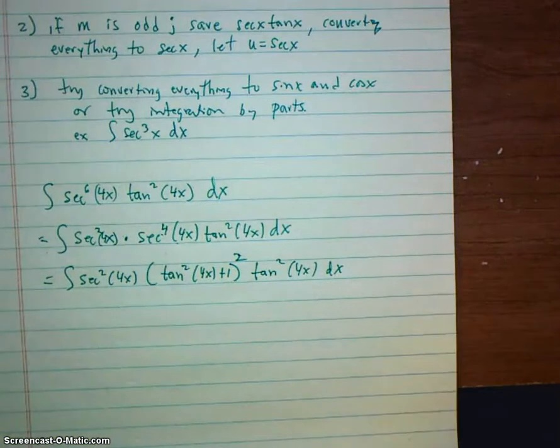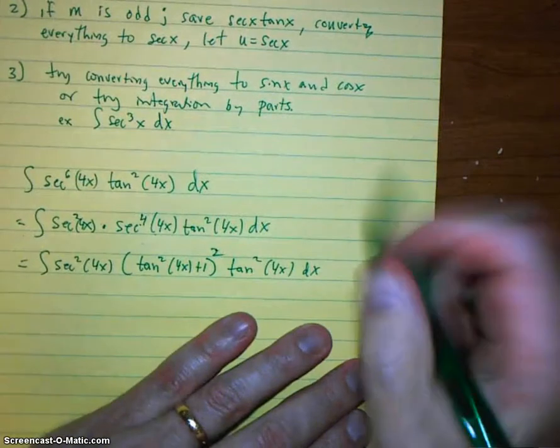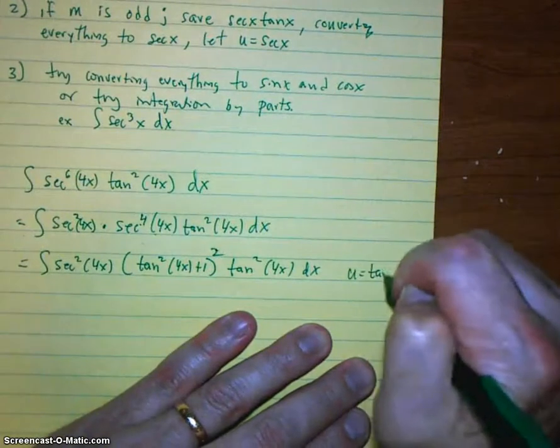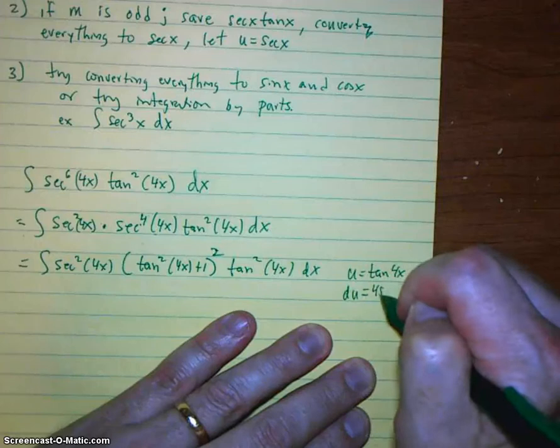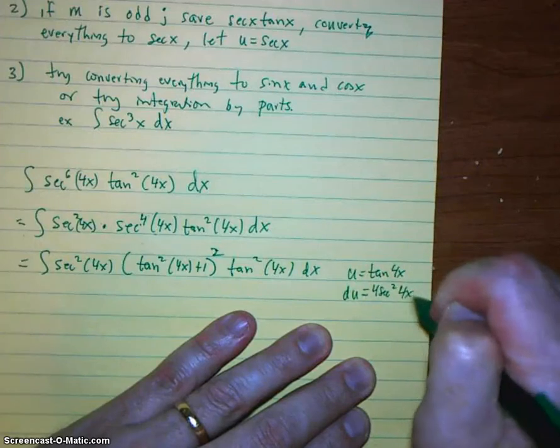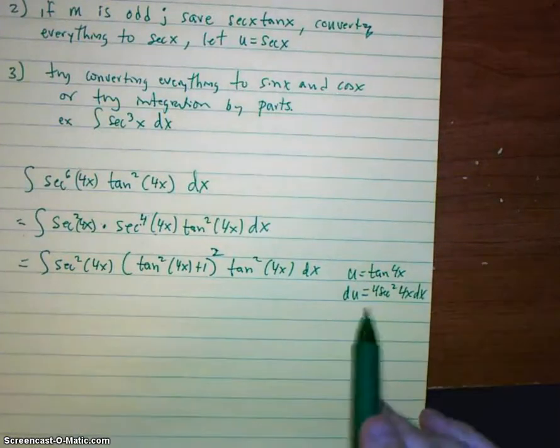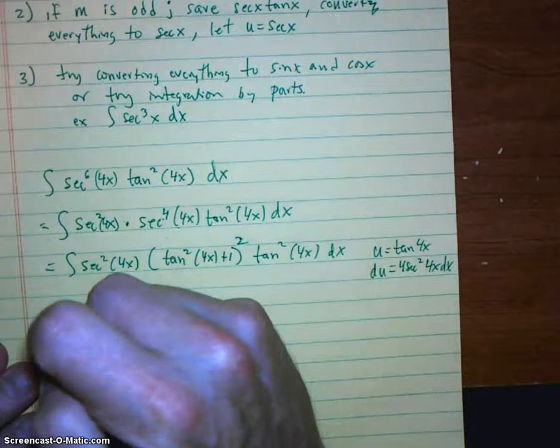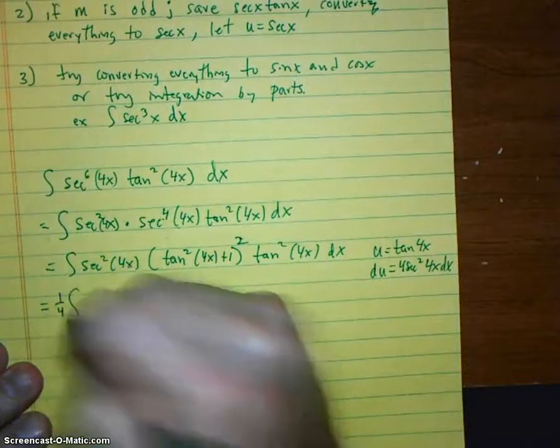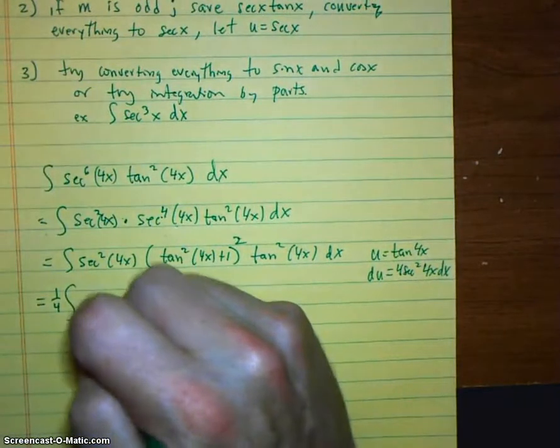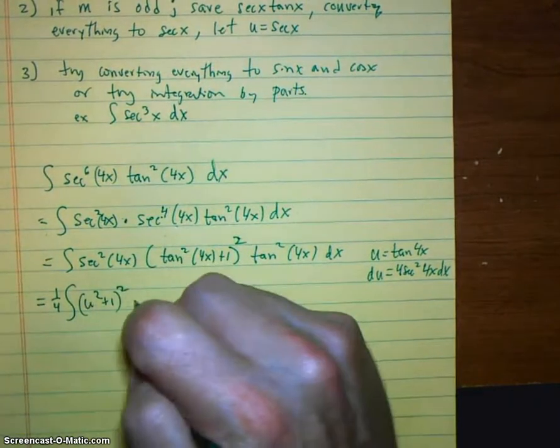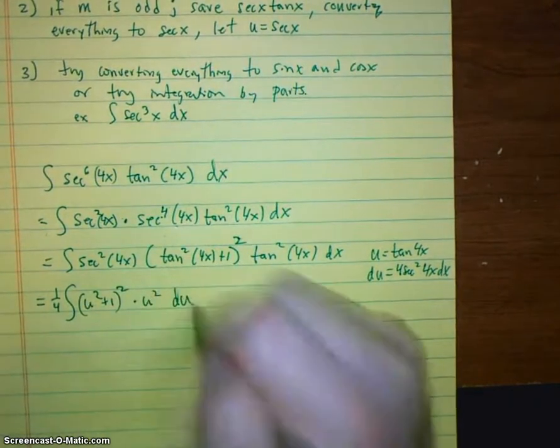All right. So what we've done, we've used our trig identities to set up so that u substitution will now work. u is going to be tangent 4x. du is 4 secant squared 4x dx. So because of this 4, I'm going to need a one-fourth integral. It's going to be u squared plus 1 squared times u squared du.